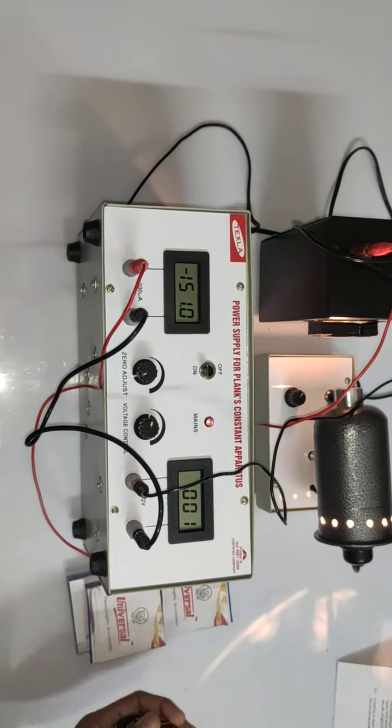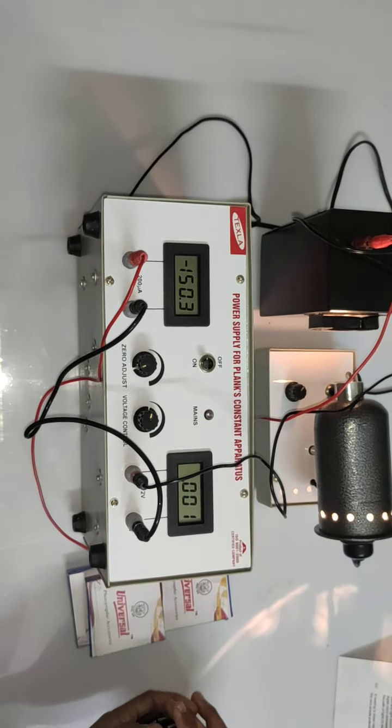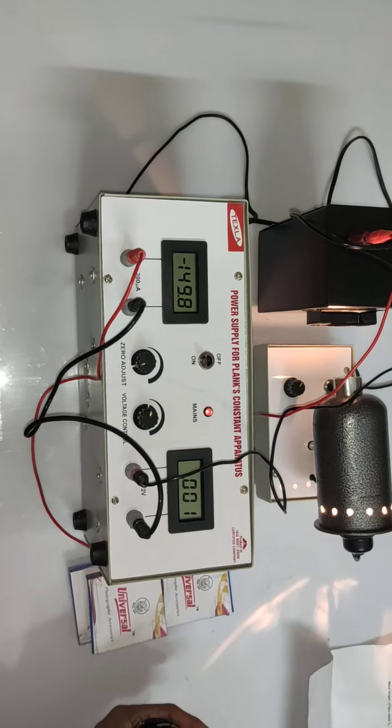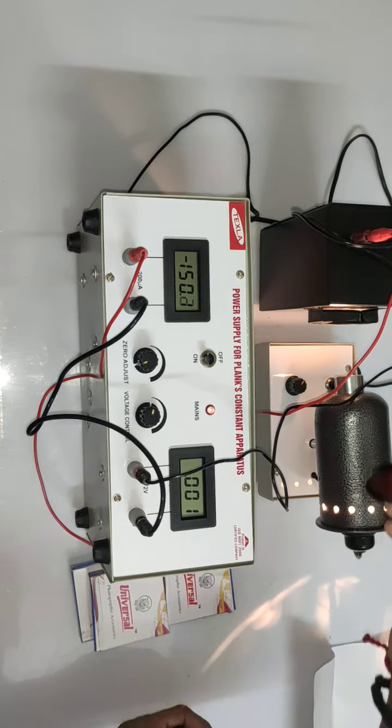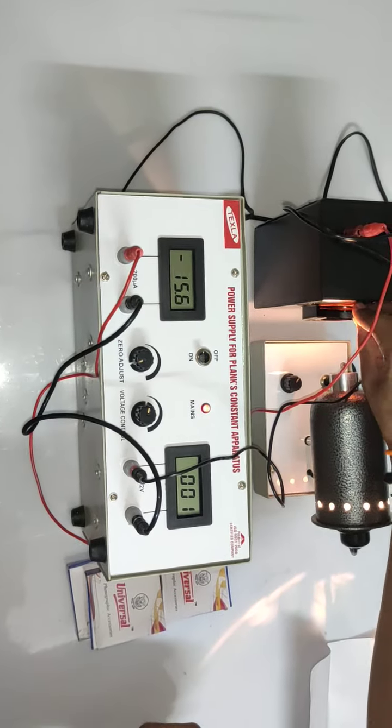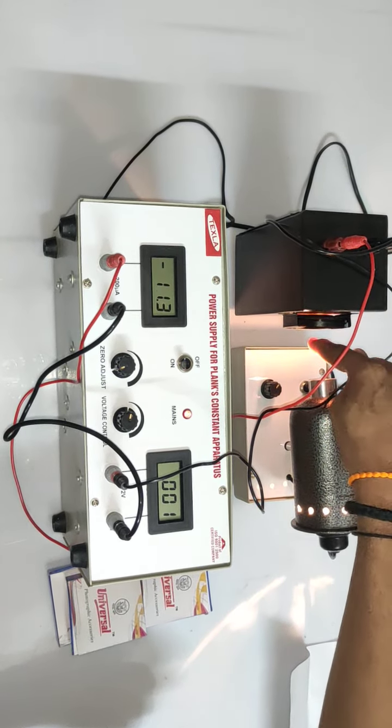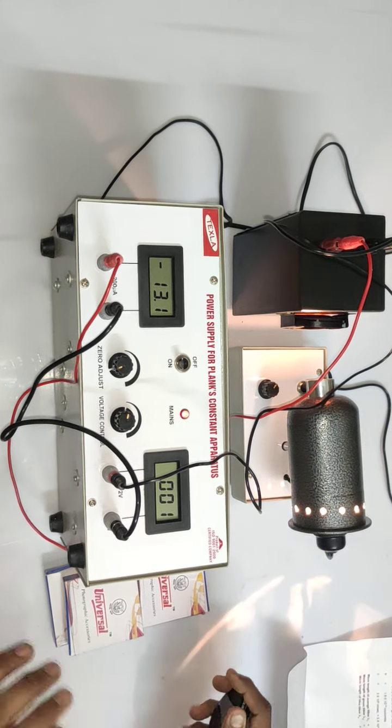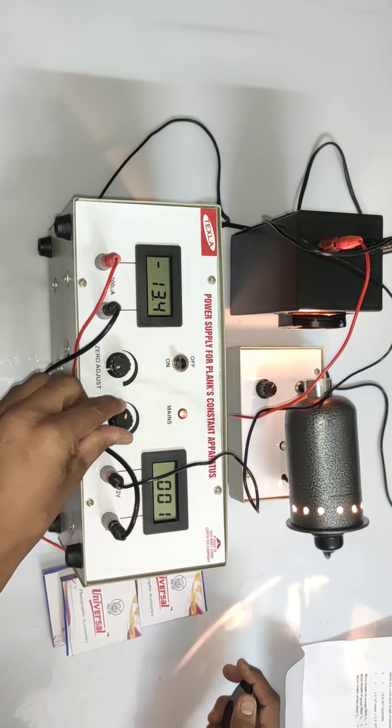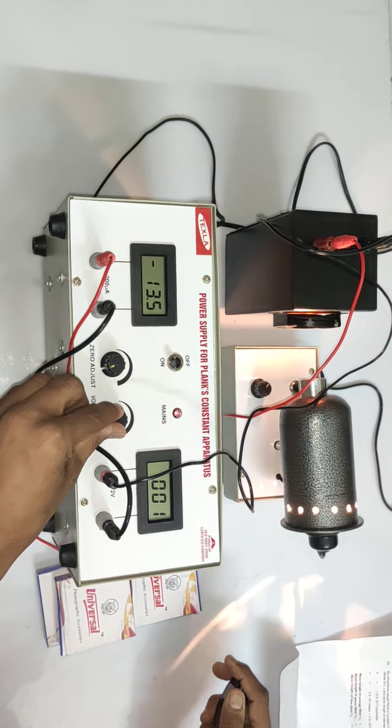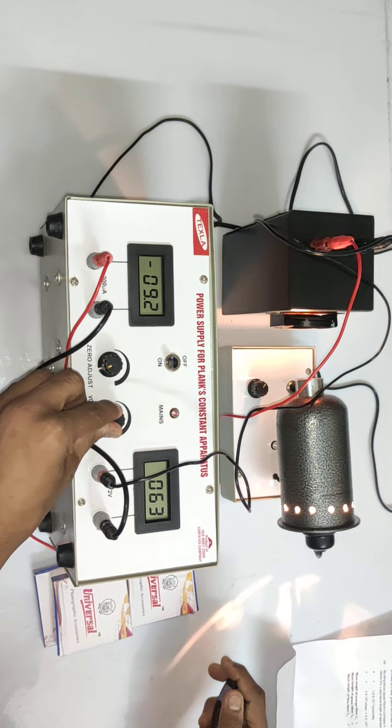You just need to substitute these values. In the manual, you have to take readings for the stopping potential voltage. Right now, the first wavelength is lambda 1, orange. I am keeping the orange filter in the channel provided in the cell.